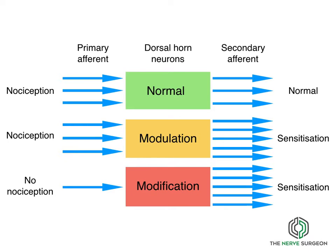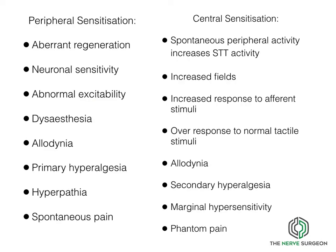Nociceptive stimulation is protective, and following a painful stimulation there is a normal response in the dorsal horn and secondary afferent signaling into the central nervous system. Modulation of this can result in increased signaling, known as sensitization. In peripheral sensitization there is aberrant regeneration of axons and increased neuronal sensitivity, normally resulting in increased excitability, dysaesthesia, allodynia, hyperalgesia, hyperpathia and spontaneous pain.